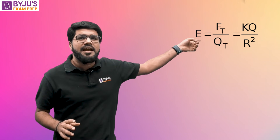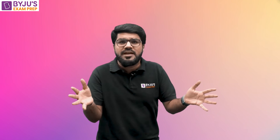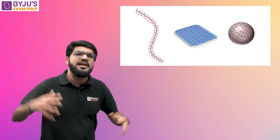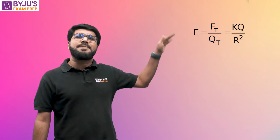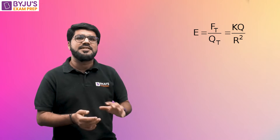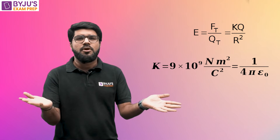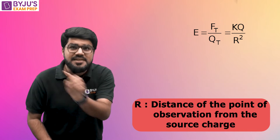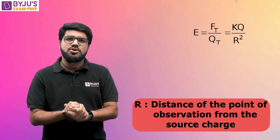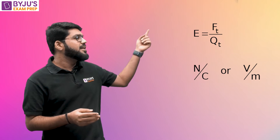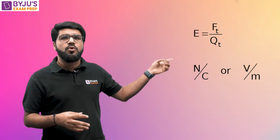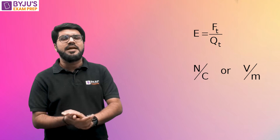So what is basically the electric field of any source charge? I have explained it with respect to a point charge, but it could be a line charge, a spherical charge, or a surface charge as well. With respect to a point charge, the electric field is defined as the force experienced by any test charge divided by the value of the test charge, which is given by KQ by R square, where K is 1 upon 4 pi epsilon naught, Q is the source charge, and R is the distance of the point of observation from the source charge. The units of electric field: since it is force per unit charge, it comes out to be Newton per Coulomb.